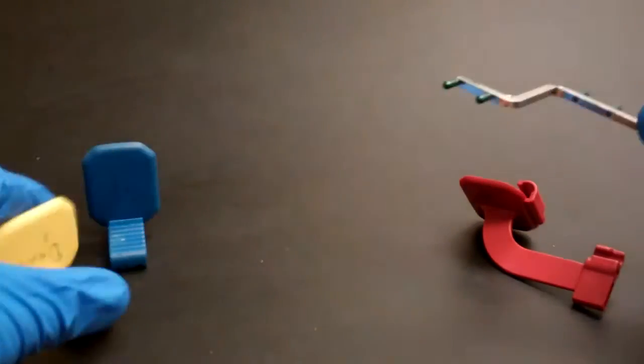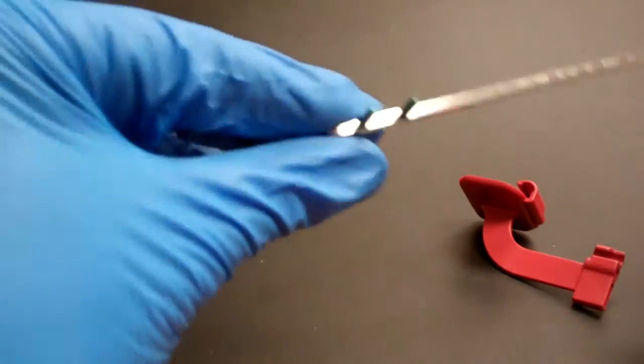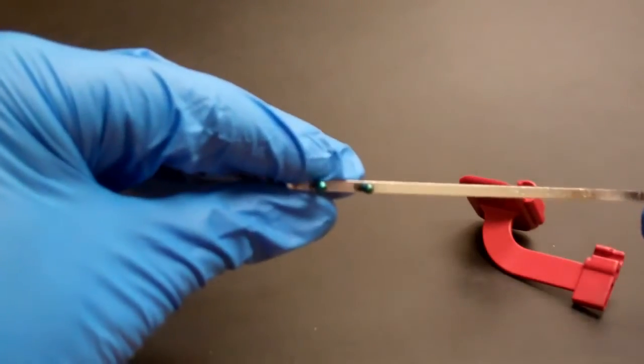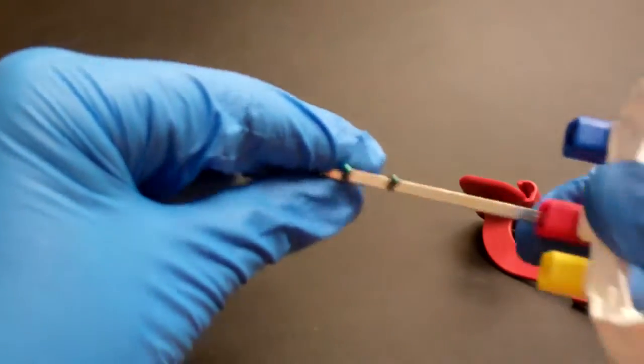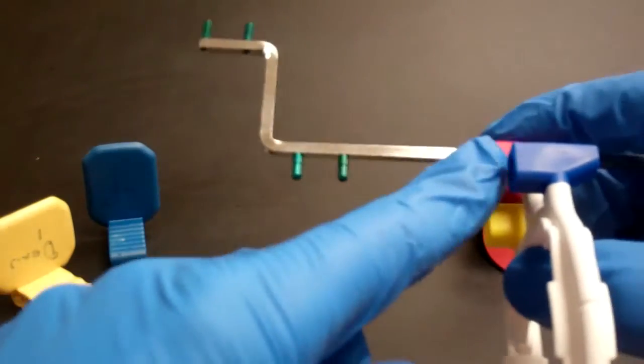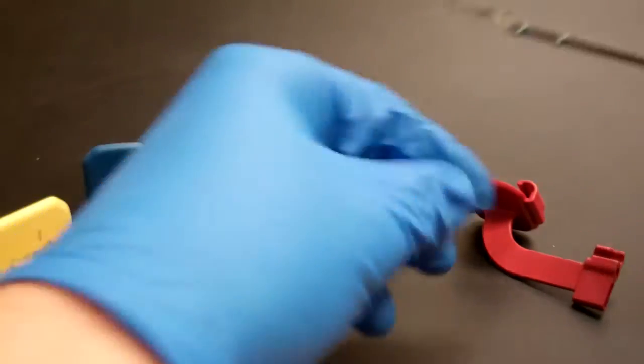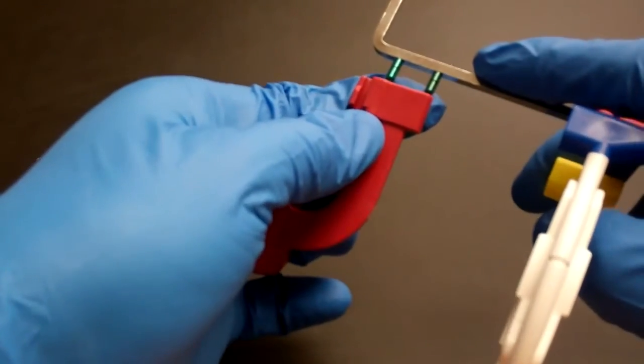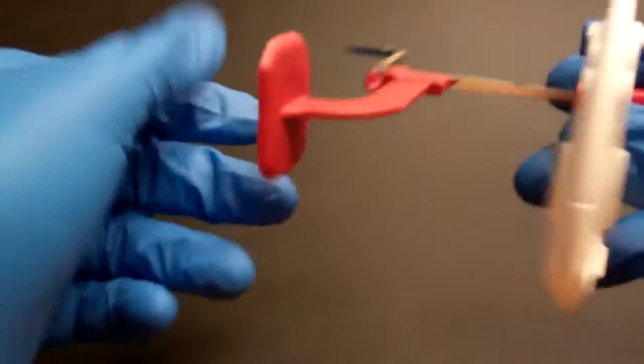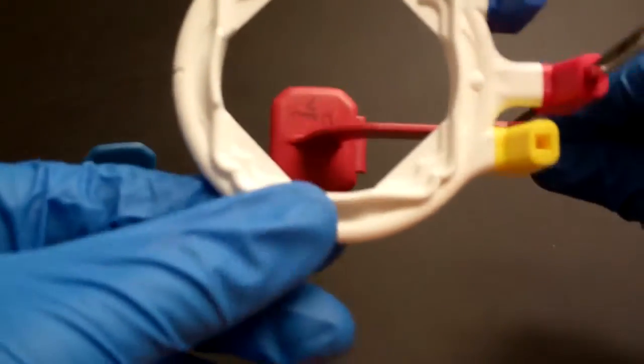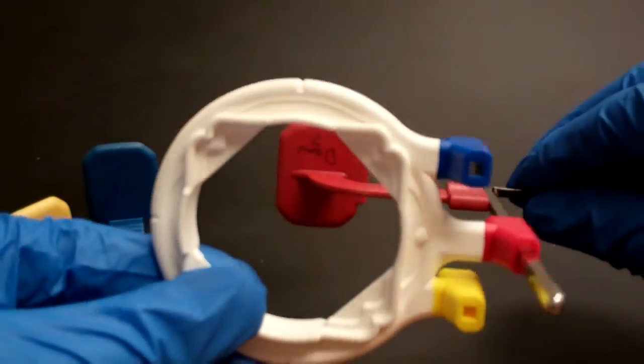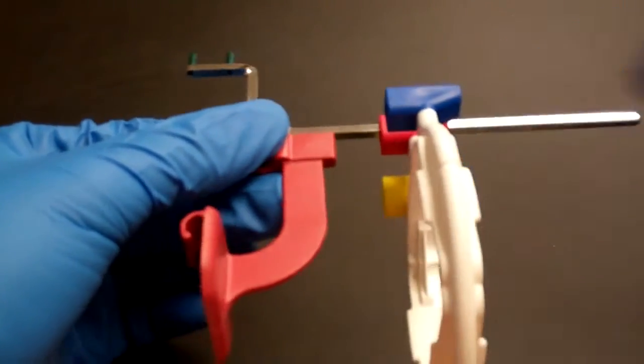And also for bite wings, we would just flip over the arm so we have the pins that are closest to the ring on the arm pointing in and then we would put our bite wing bite block on there. This little part here would be sticking out of the patient's mouth. You can kind of see how that works.